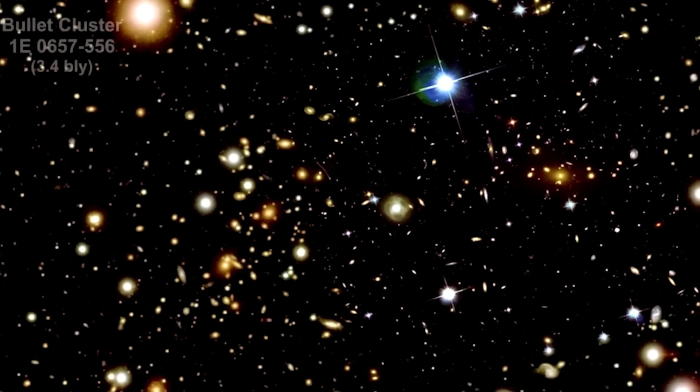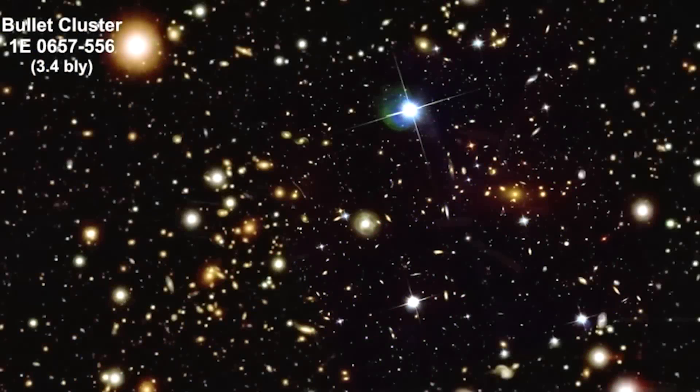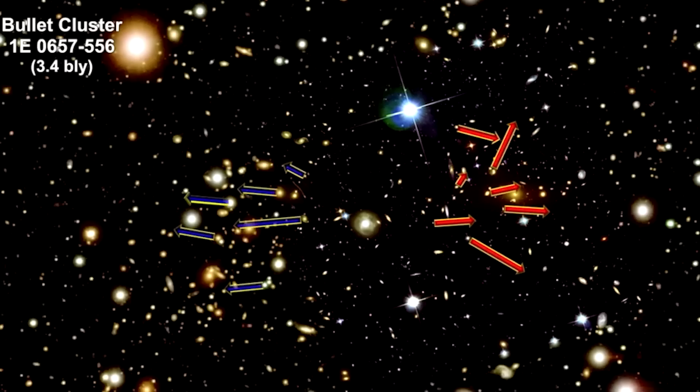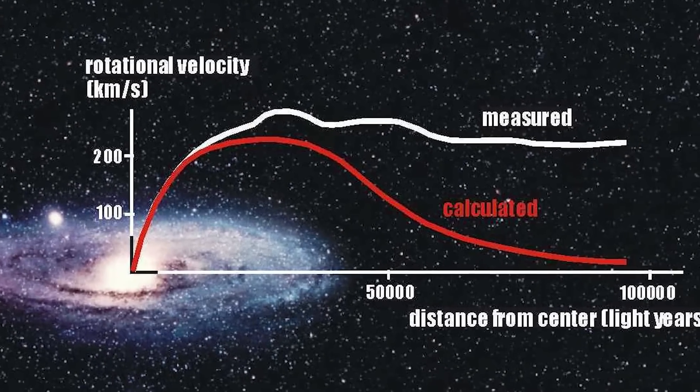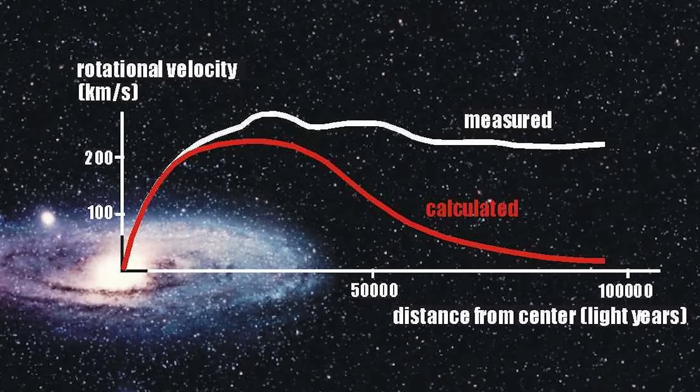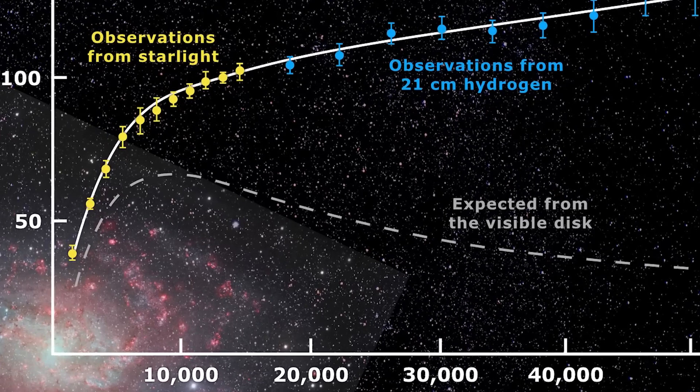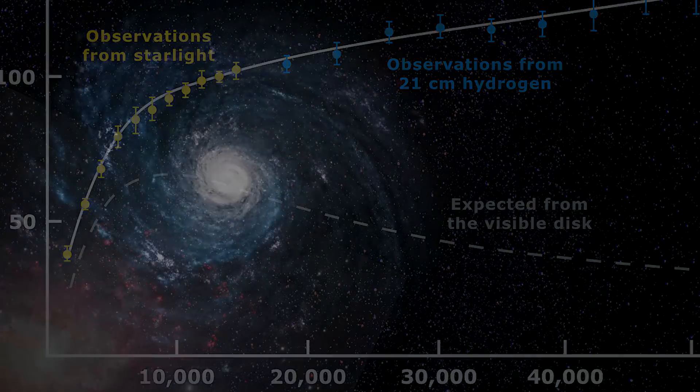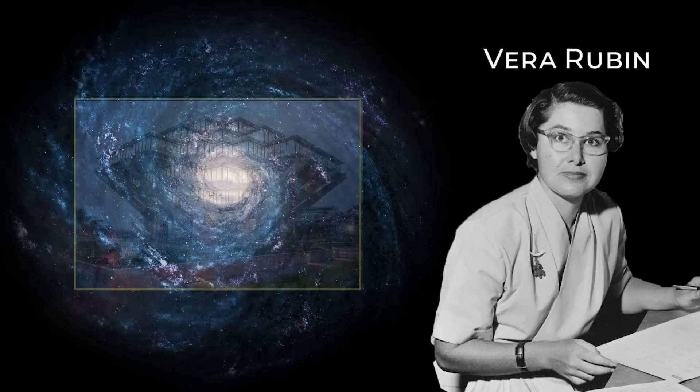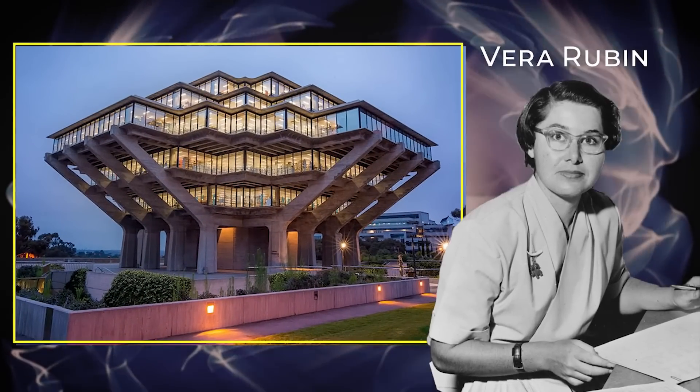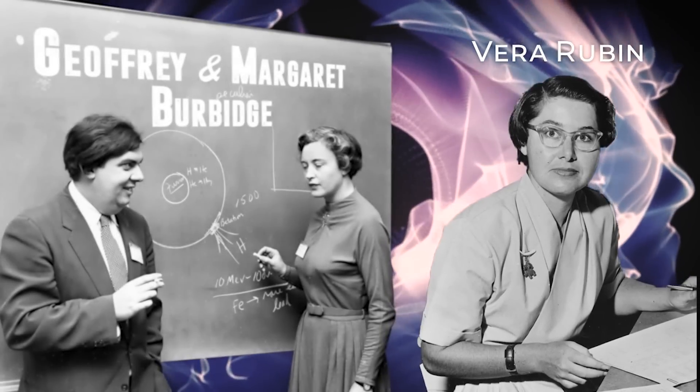MOND explains away the need for dark matter by instead invoking a new form of gravitational force that operates not on local scales but on cosmic scales between galaxies to explain the peculiar rotation curves first observed by Vera Rubin. Vera Rubin was trained right here at UC San Diego by my late great colleagues Margaret and Jeffrey Burbage.